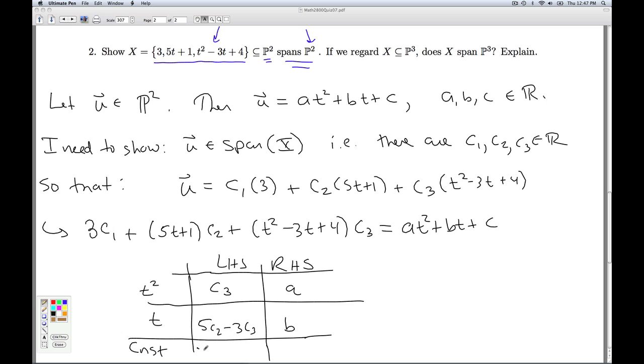And then for the constant, I got a 3c1 plus c2 plus 4c3. So I ran out of room. But 3c1 plus c2 plus 4c3. On the right hand side, that is equal to c.